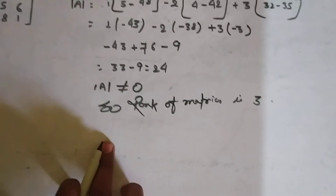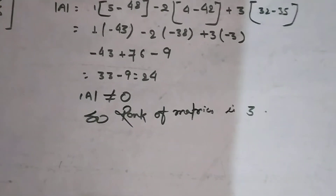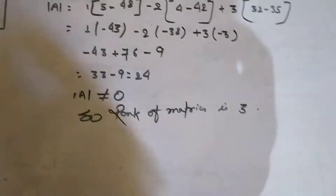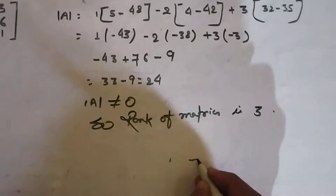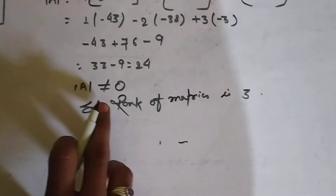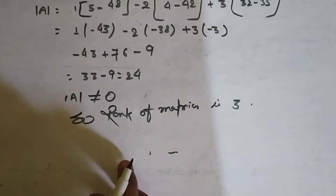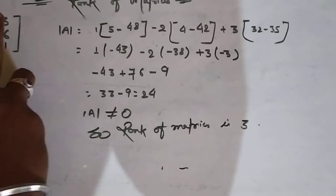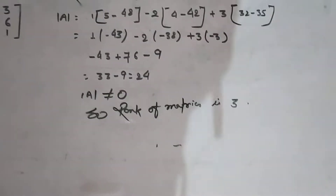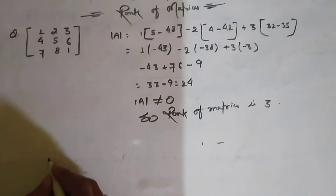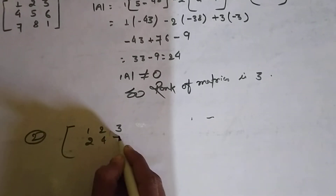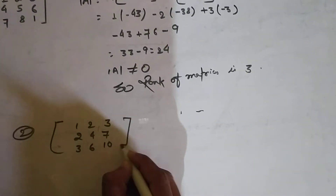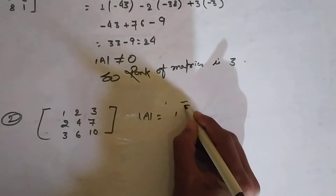If A is a square matrix whose magnitude is equal to 0, its rank will be greater than or equal to 1. If |A| is equal to 0, then the rank of the matrix is greater than 1. So the rank of the matrix equals the number of rows and columns, meaning rank of matrix could be equal to 3 only if |A| ≠ 0.